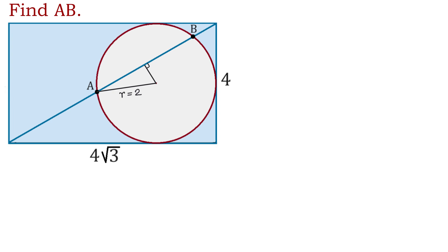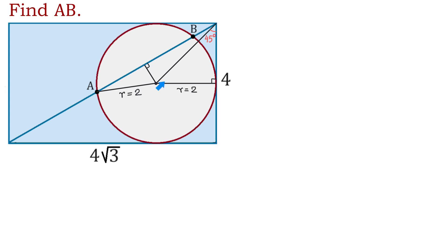To find it, first we will connect the center to this point of tangency. The radius here is 2 and this angle is a right angle because a tangent is perpendicular to the radius at the point of tangency. Now we will also connect the center to the upper right vertex of the rectangle. Now we have an isosceles right triangle and this angle measures 45 degrees.